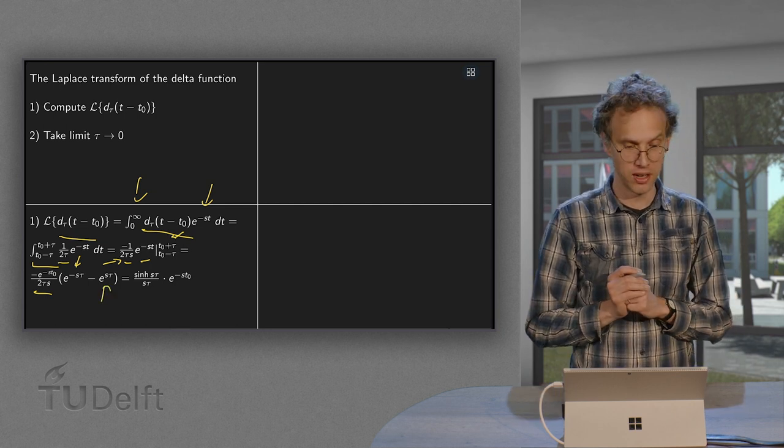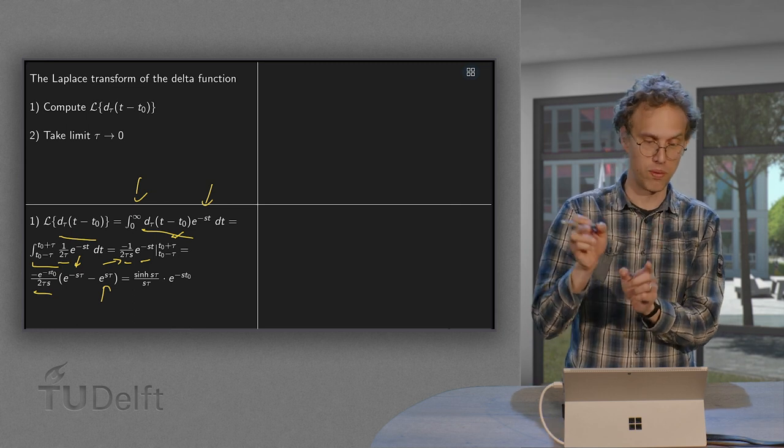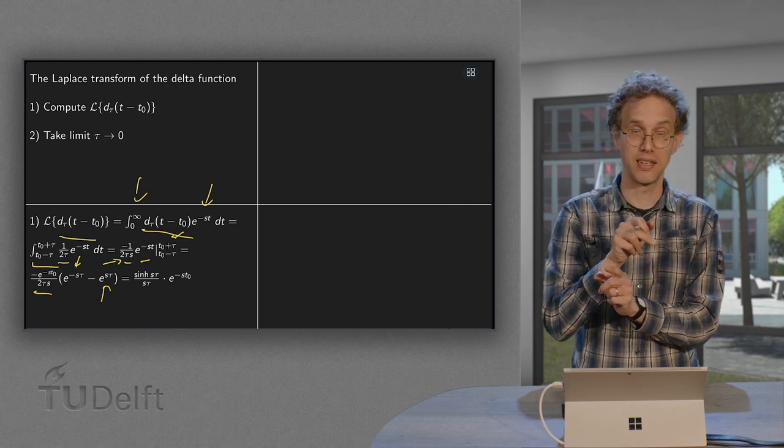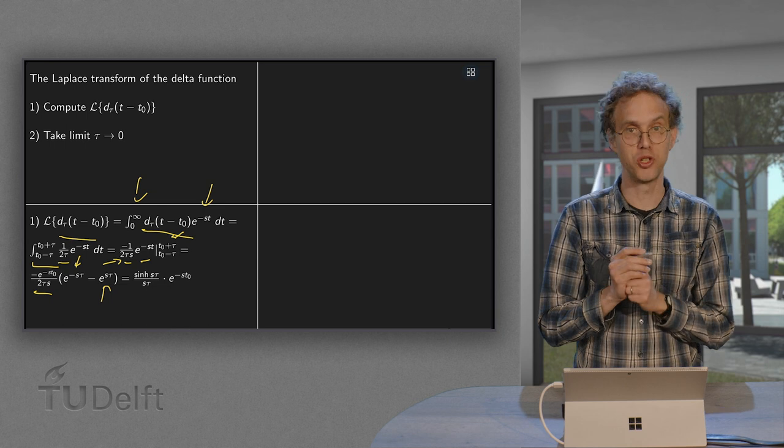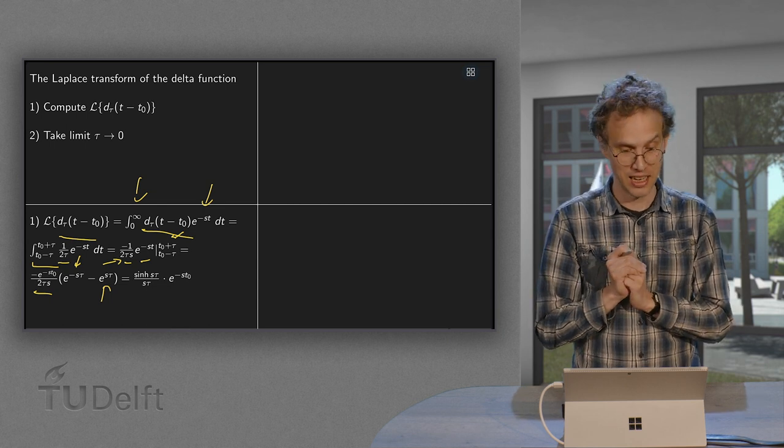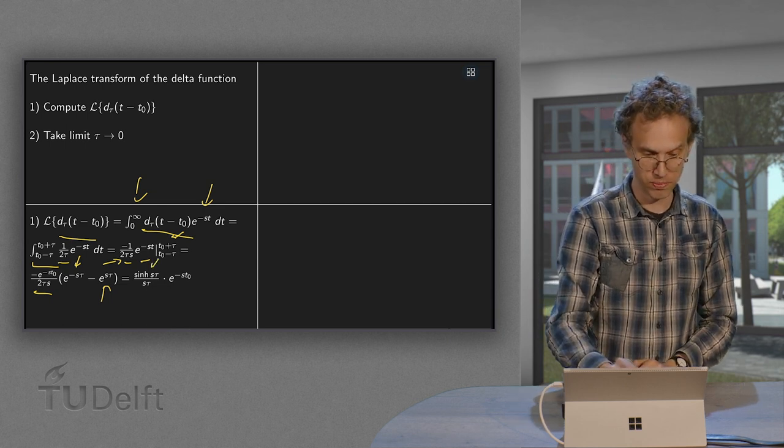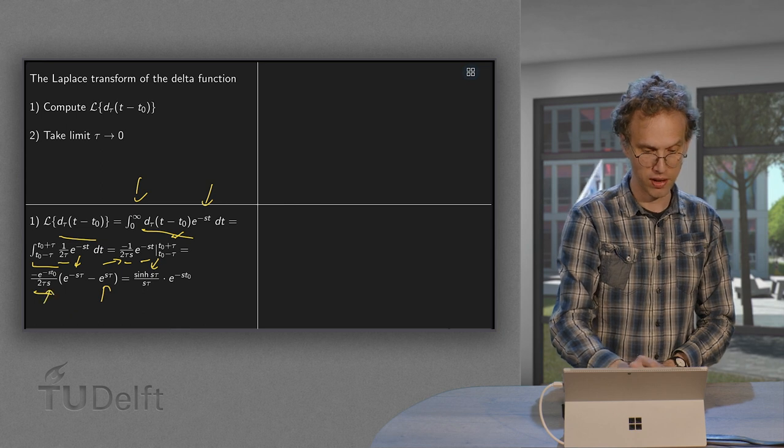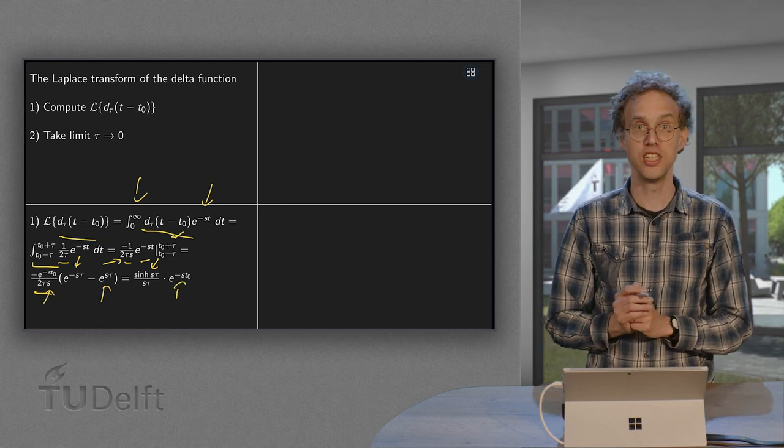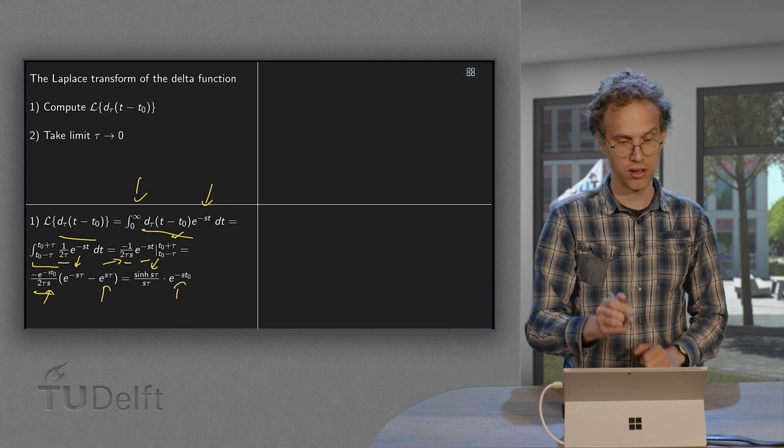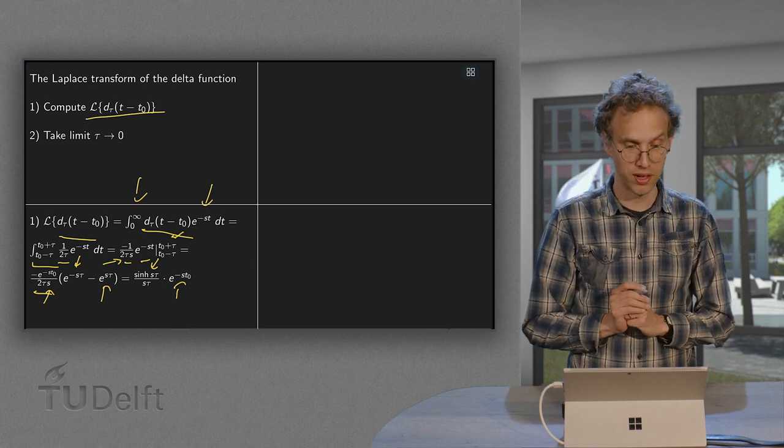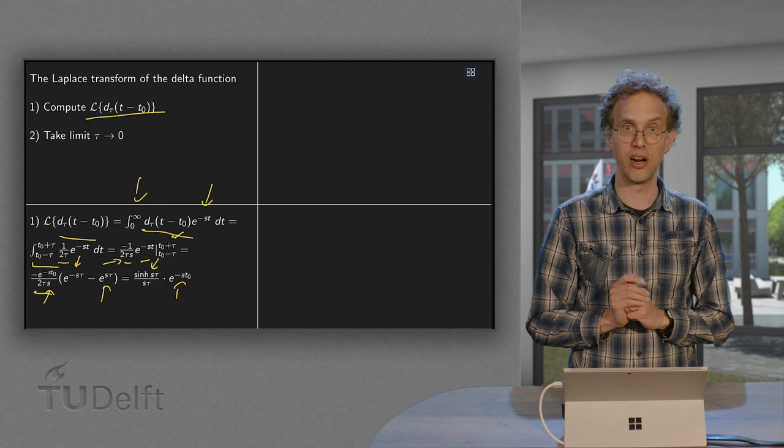And now you see, you have an e to the power sτ minus e to the power minus sτ, divided by two, which is exactly a sinh of sτ. And we have still an sτ left and an e to the power minus st₀. So that's the first step. The Laplace transform of the d_τ of t minus t₀.